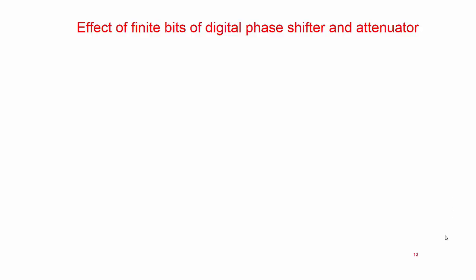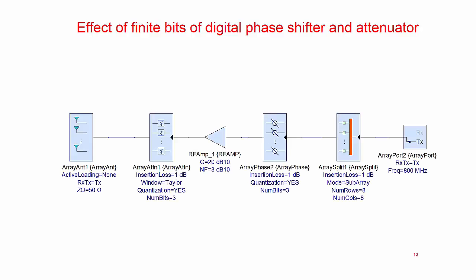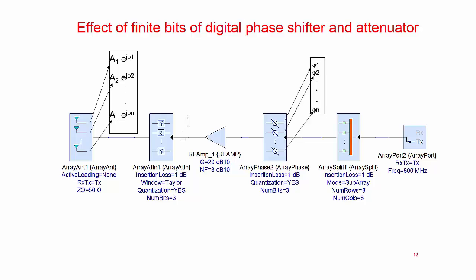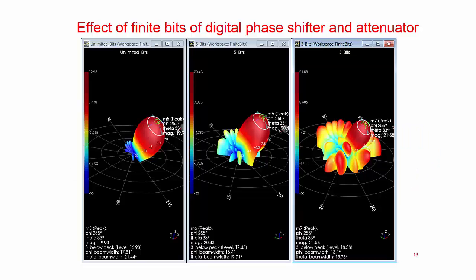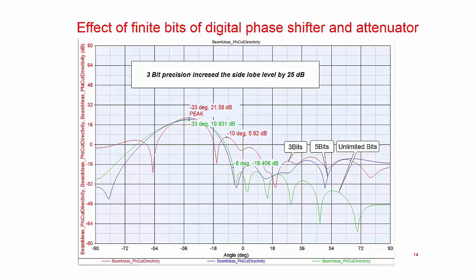Next, let us study the influence of the number of bits of the digital phase shifter and attenuator on the far-field pattern. The phase distribution and amplitude distribution of the signal arriving at the antenna elements are achieved by programming these digital phase shifters and digital attenuators. The digital control word length is limited usually to 3 to 6 bits. The plot here shows a comparison between unlimited bits, 5 bits, and 3 bits for phase shifters and attenuators. The 3-bit precision clearly increased the number of side lobes and their levels. We can see that the 3-bit phase shifters and 3-bit attenuators narrowed the beam width by 5 degrees and increased the side lobe levels by almost 25 dB.